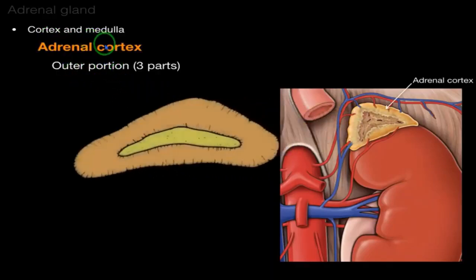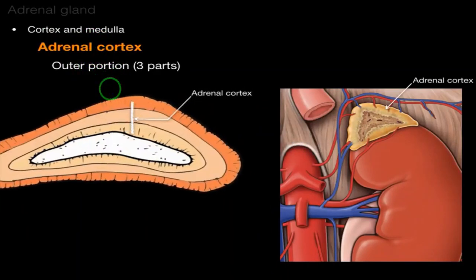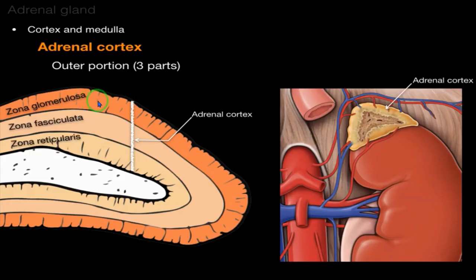The cortex is the outer portion and has three parts: zona glomerulosa (outer layer), zona fasciculata (middle layer), and zona reticularis (inner layer). The middle region is the adrenal medulla.